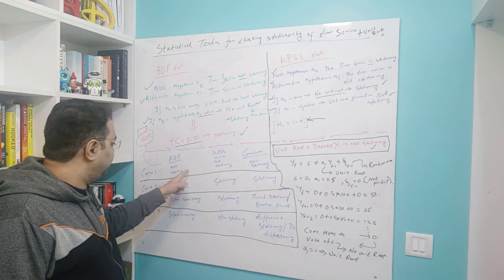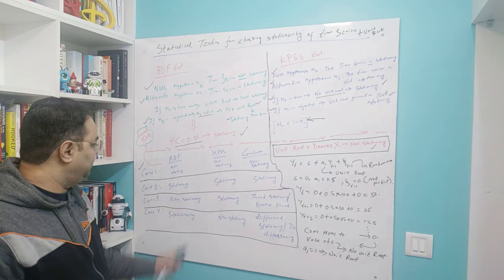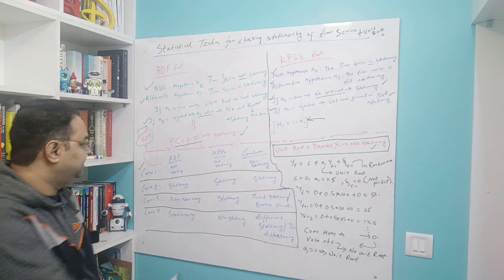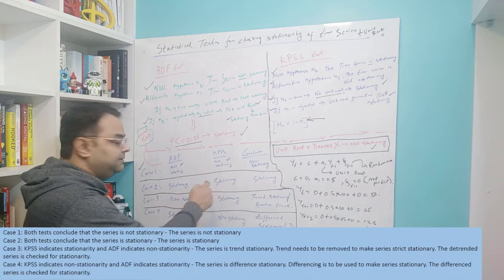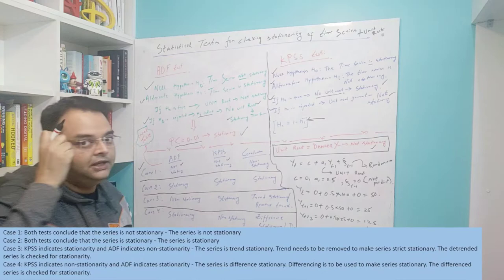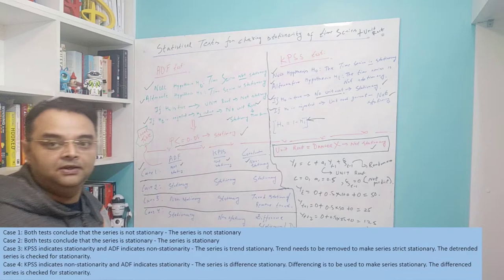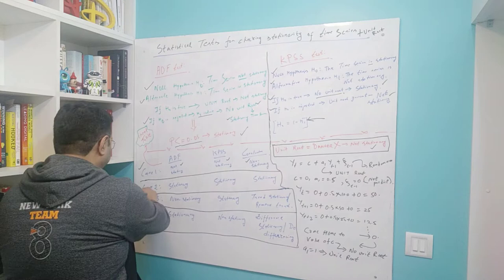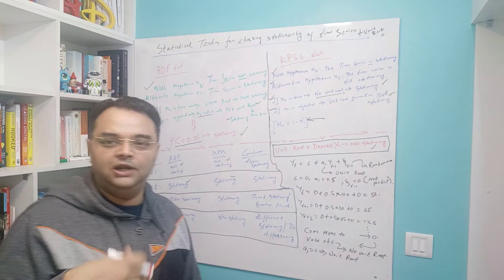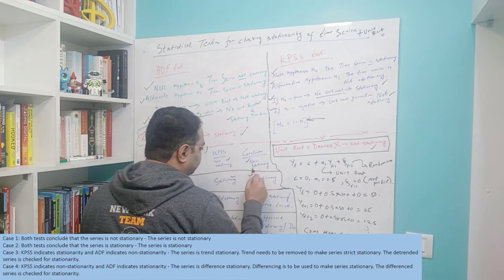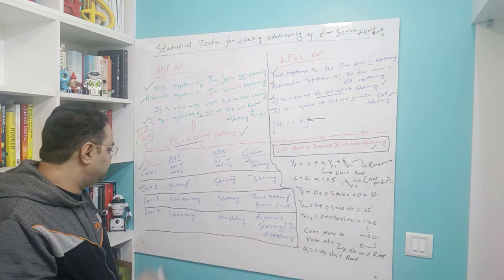There are four combinations. Case one: ADF tells you the time series is not stationary, and KPSS also agrees — both say it is non-stationary. That's a no-brainer; your conclusion is that the time series is not stationary. Case two: both tests tell you the time series is stationary. Both tests are in sync, so you conclude the time series is stationary.